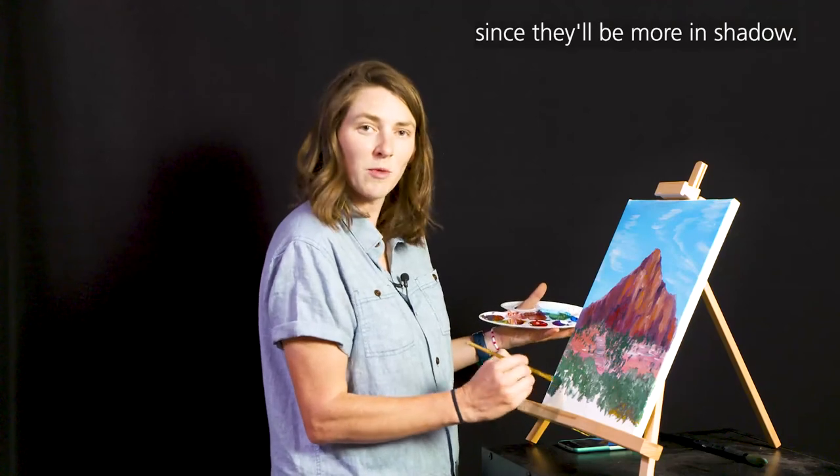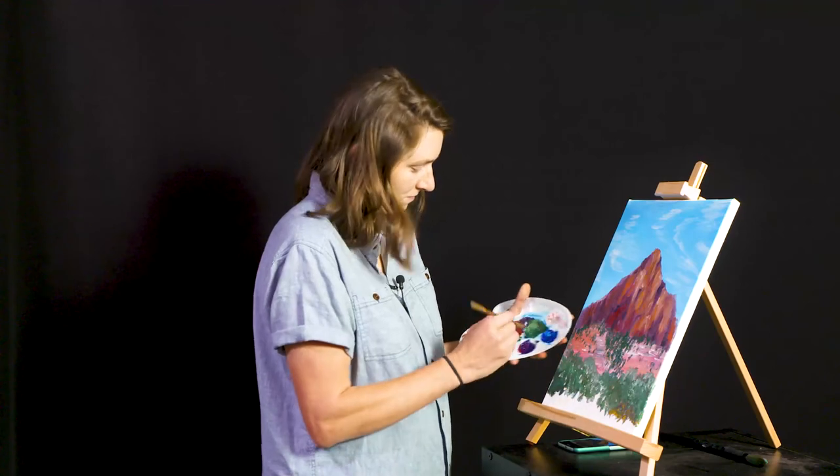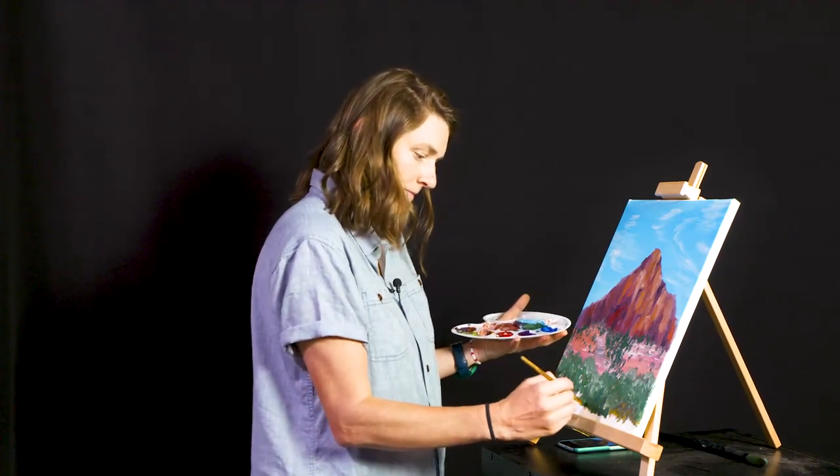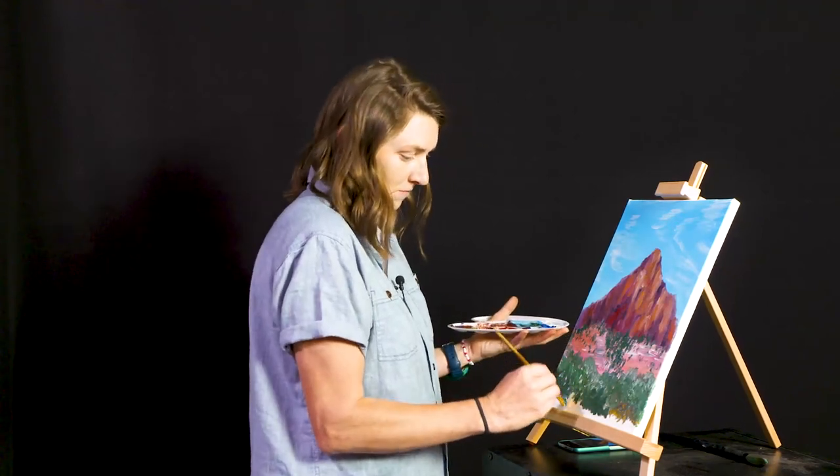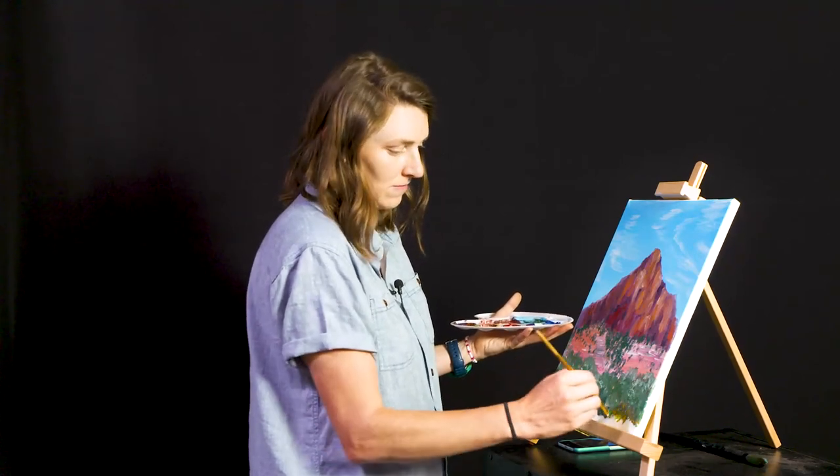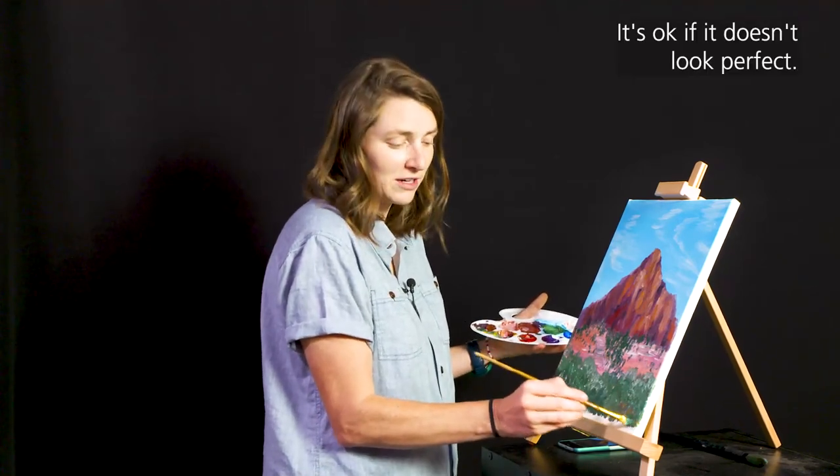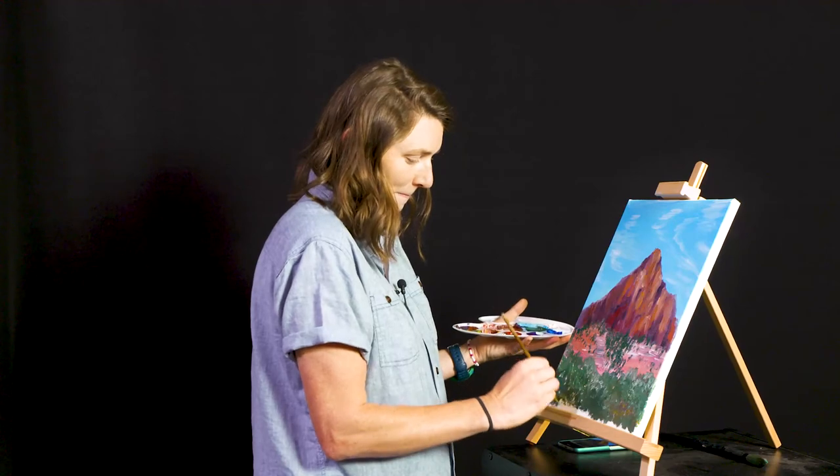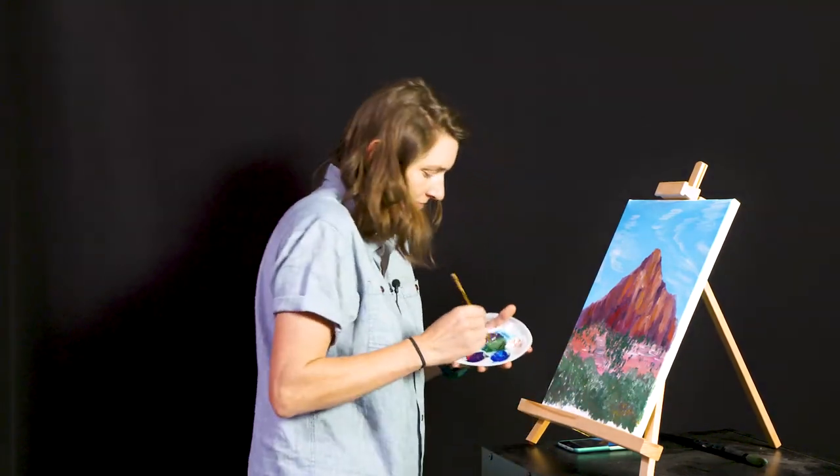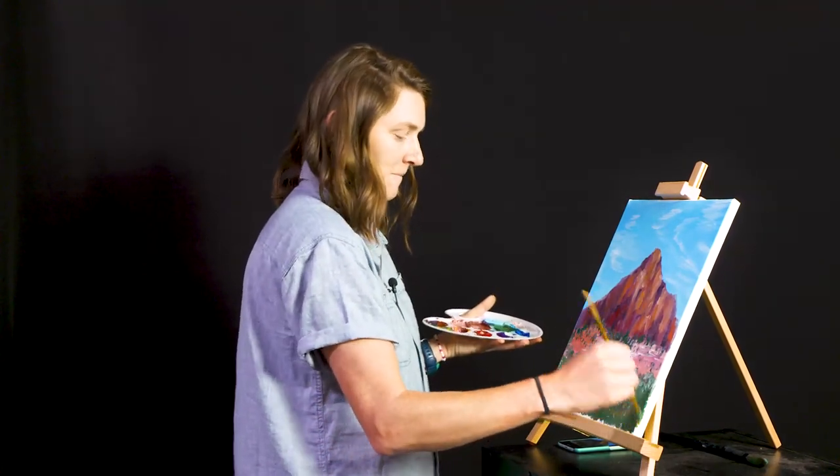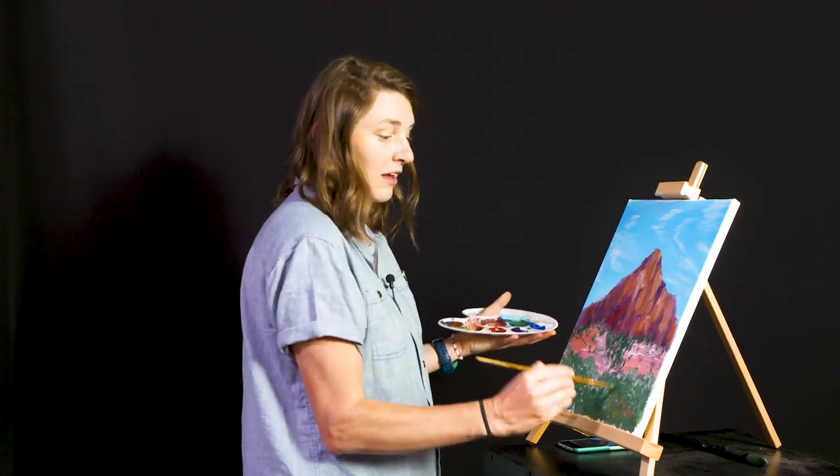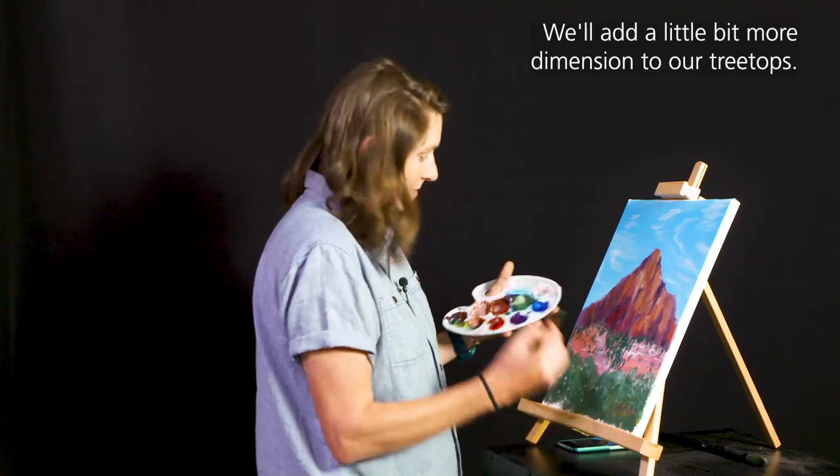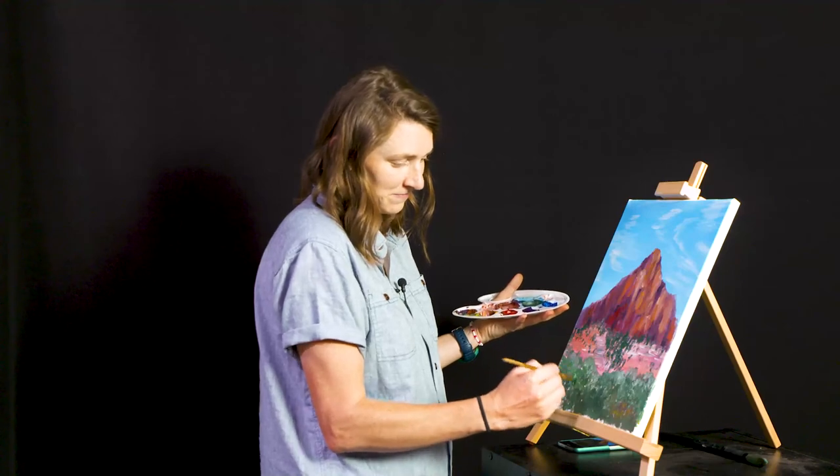And then we'll give some highlights on our treetops where the sun might be touching those leaves. We'll work down to some darker colors as they'll be more in shadow. It's okay if it doesn't look perfect. Whatever trees you create are going to be great trees. Feel free to keep fiddling with your foreground if you need to, but I think we are just about done with our painting here. We'll add a little bit more dimension to our treetops and that will be it.